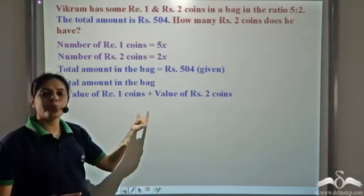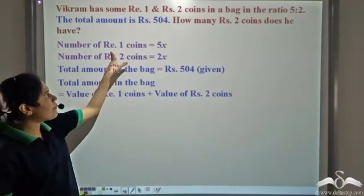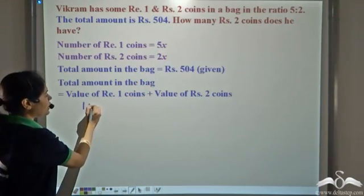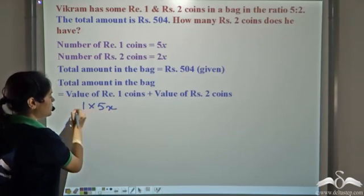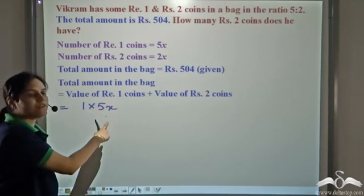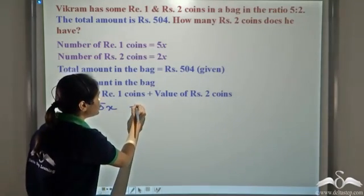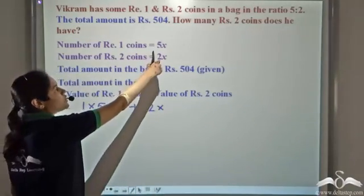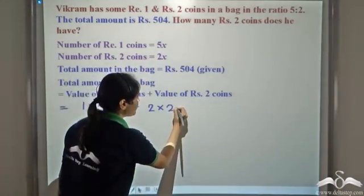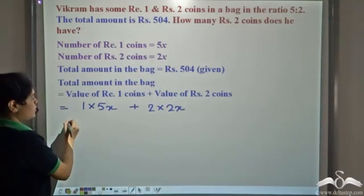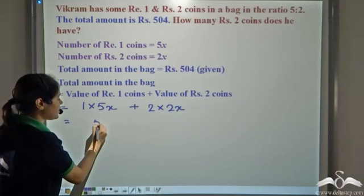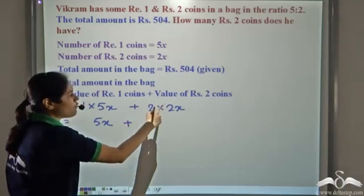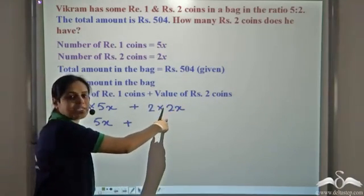Now what is the value of Rupee 1 coins? We know that the number of Rupee 1 coins is 5x. So the value of Rupee 1 coins will be 1 into 5x, that is 1 Rupee into 5x number of coins. Similarly for Rupee 2 coins, it will be 2 Rupee into 2x. So the value of Rupee 1 coins is 5x, and the value of Rupee 2 coins is 2 into 2x which is 4x.